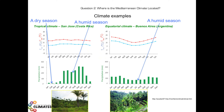Hence similarities for the temperatures and differences for the precipitation. These two climates allow vegetation to grow very easily, and we will obviously have luxuriant vegetation under both climates.